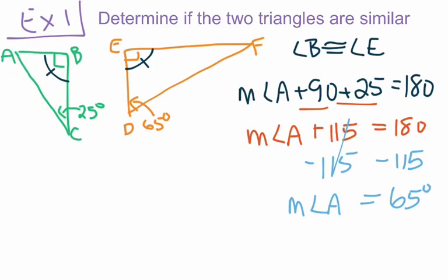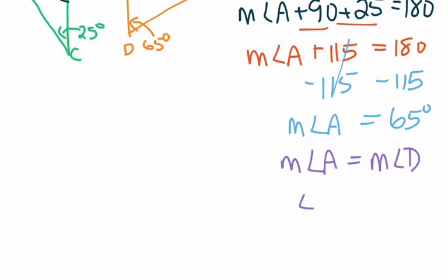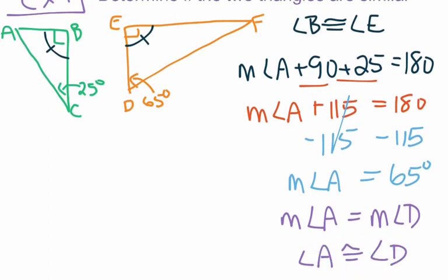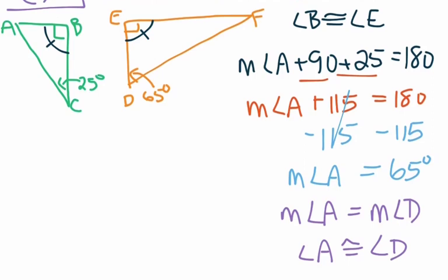Therefore, we know that the measure of angle A is congruent to the measure of angle D. Angle A is congruent to angle D — that's one pair of congruent angles. We already had another pair: angle B is congruent to angle E. So we have our two pairs of congruent angles, which is all the information we need to state that these two triangles are similar to each other.